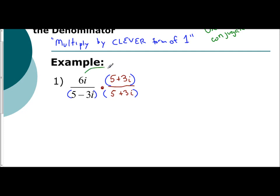And that assists me with how to simplify from here. You would distribute on the top, 6i to 5 and 6i to 3i. And that gives you 30i plus 18i squared.